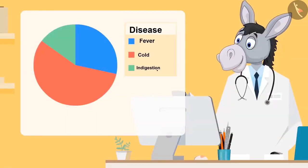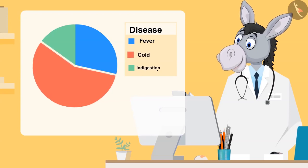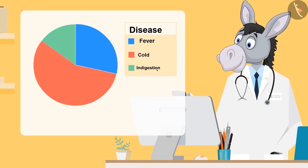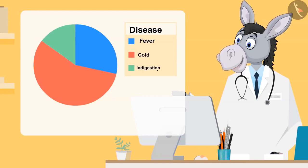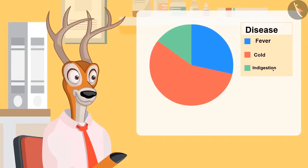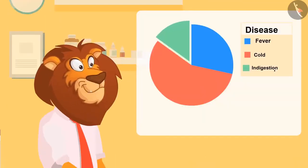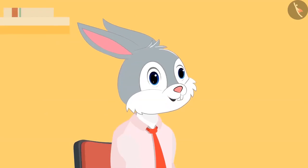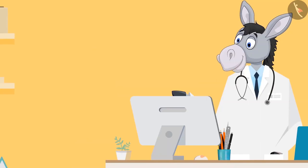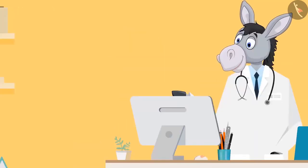This chart represents which disease has troubled most of the kids. Very good. As you can see in the chart, the number of children who got sick due to cold are represented by red color, due to fever by blue, and due to indigestion by green color. Doctor uncle, most of the children had cold. Right. And the least number of students were affected by which disease? Indigestion. Yesterday I got sick due to indigestion. Are you okay now? Yes. Let's look at some more examples.